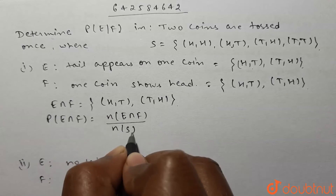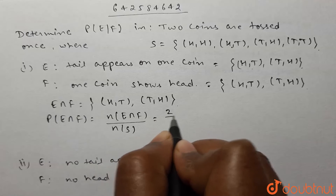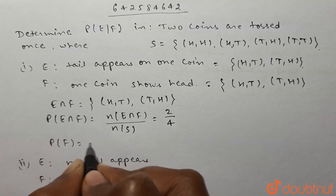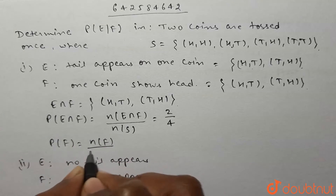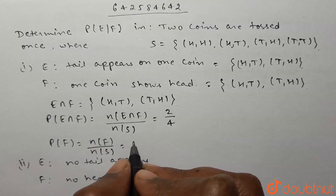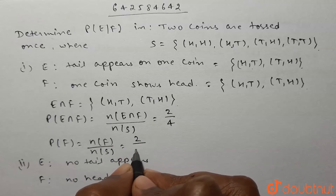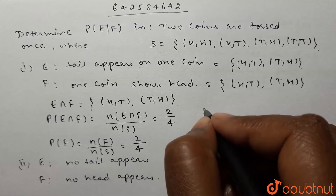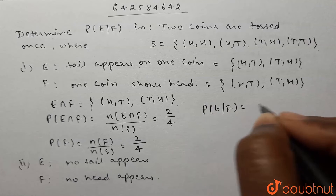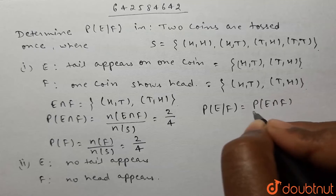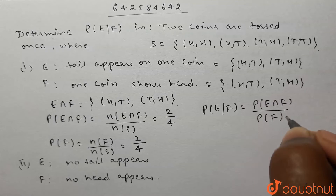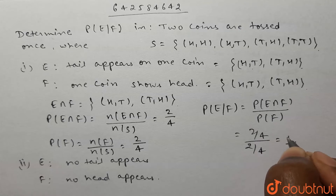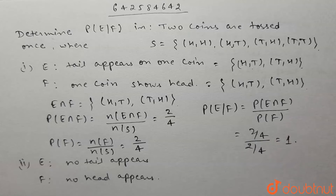The probability of E intersection F equals the number of elements in E intersection F divided by the number of elements in the sample space, which is 2/4. The probability of F is the number of elements in F divided by the sample space size, which is also 2/4. Therefore, probability of E given F equals P(E∩F) divided by P(F), which is (2/4)/(2/4) = 1. The answer to the first part is 1.